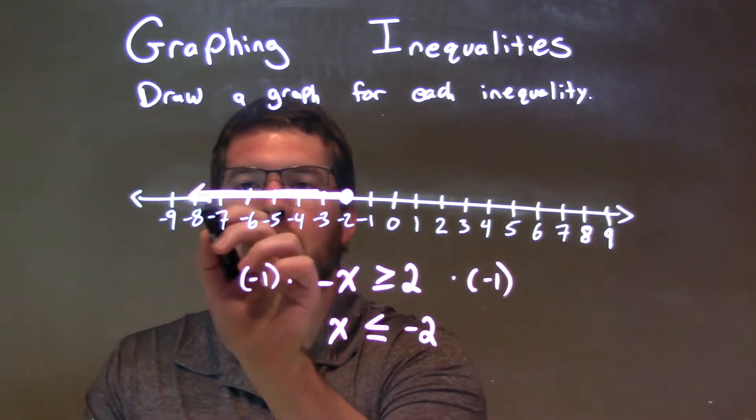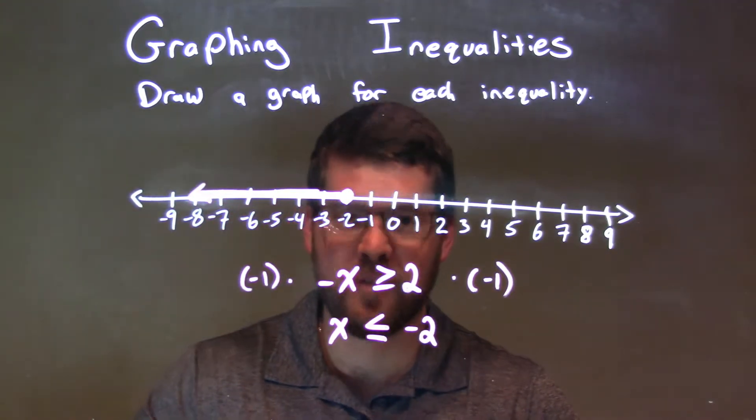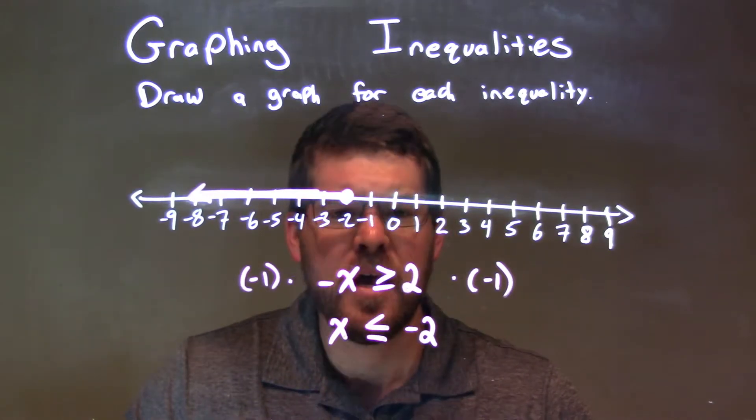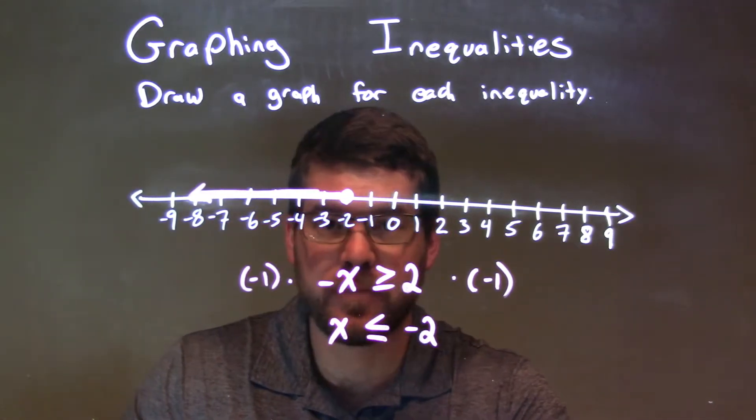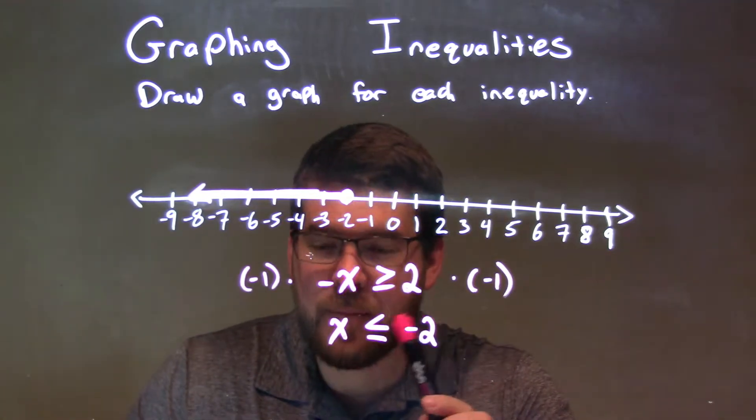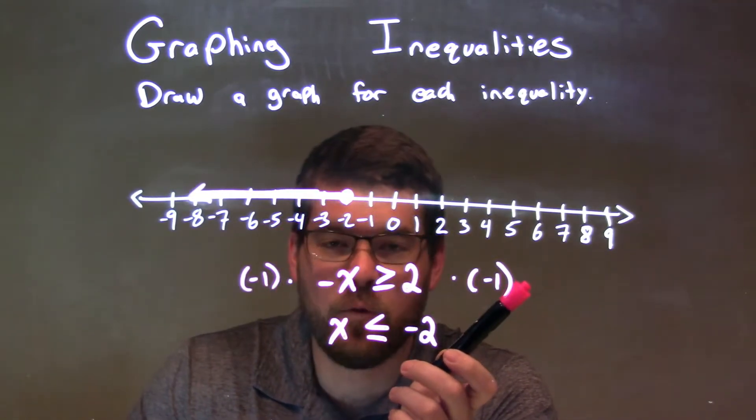And now we have a graph that matches our final answer. Quick recap here. We're given negative x is greater than or equal to 2. We want to get x by itself, so we multiply both sides by negative 1.